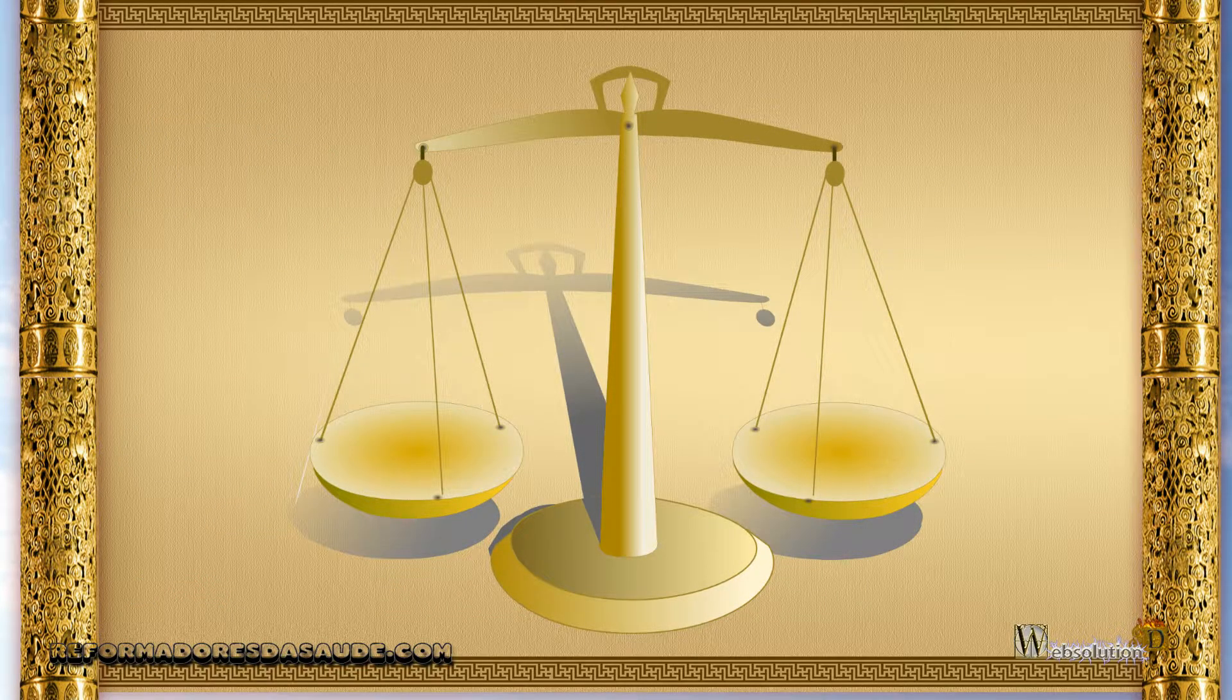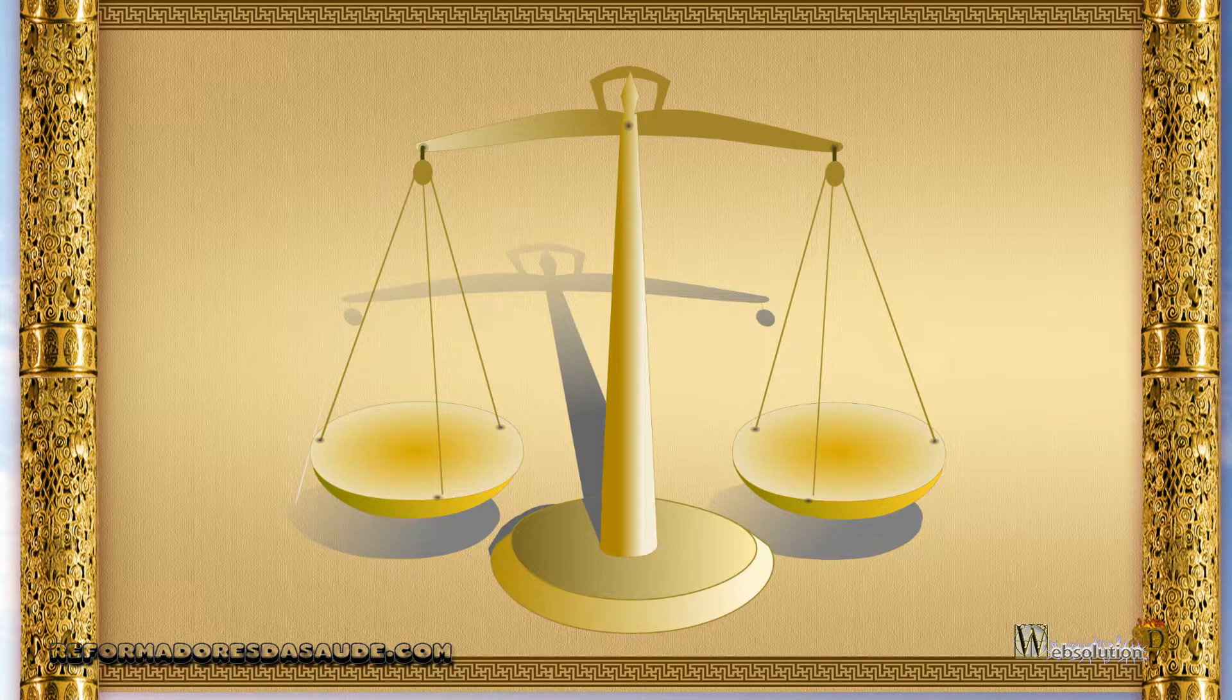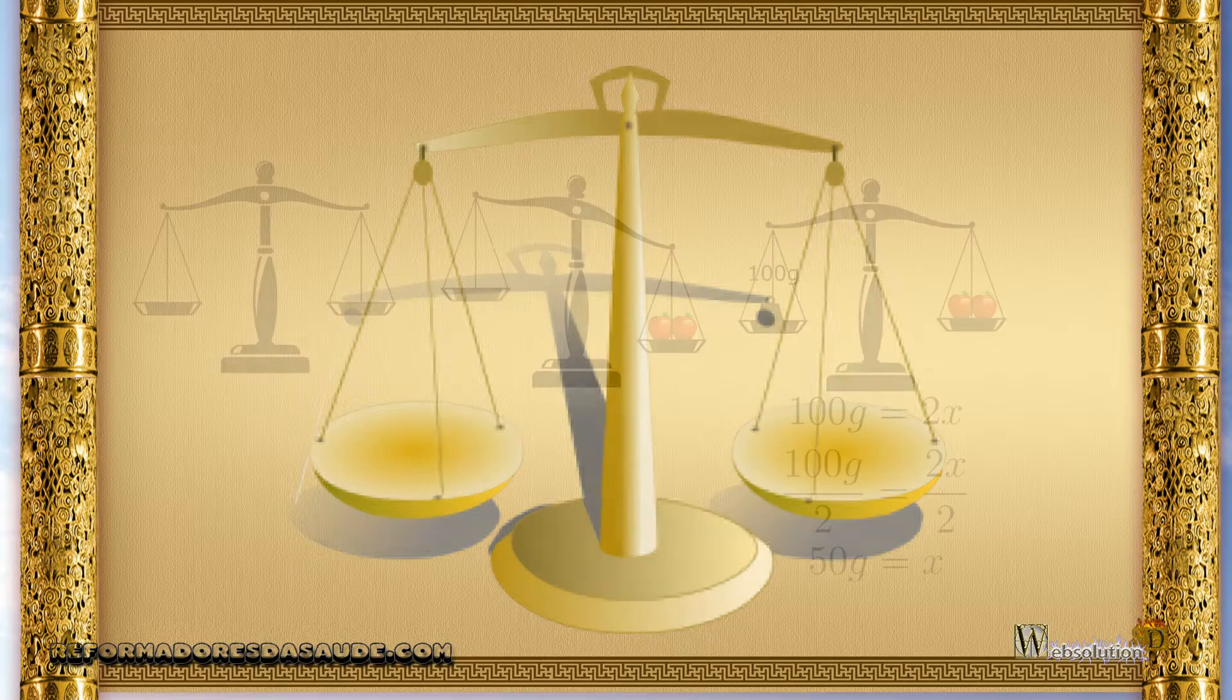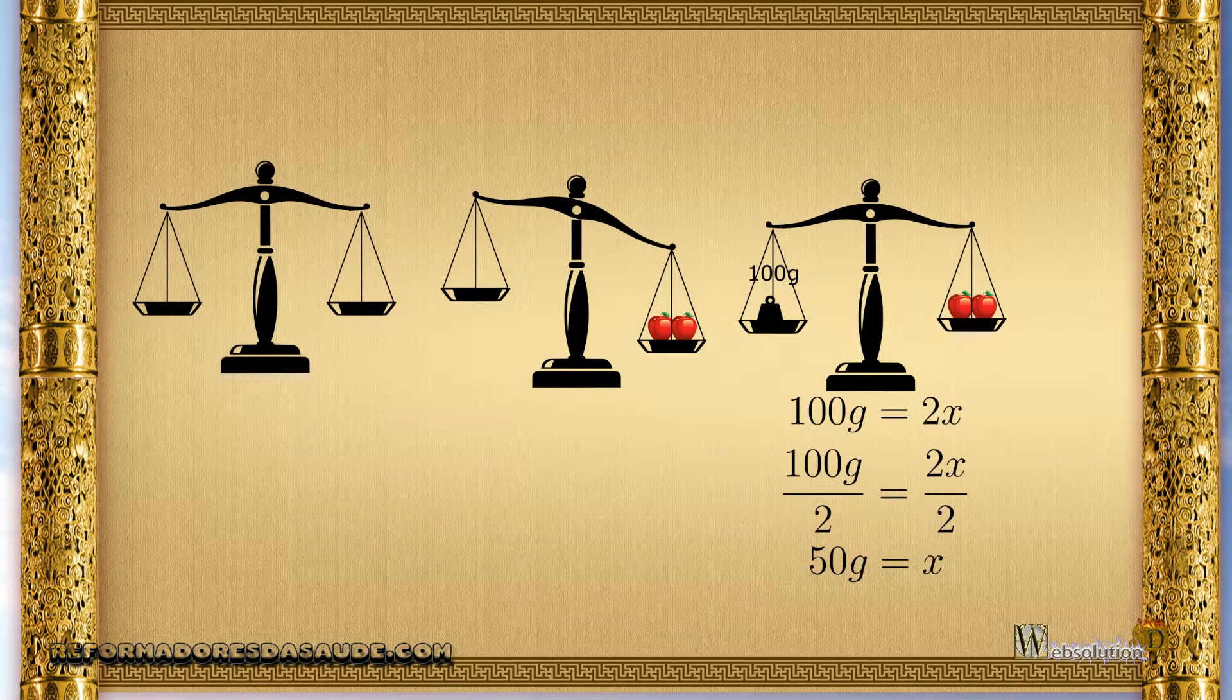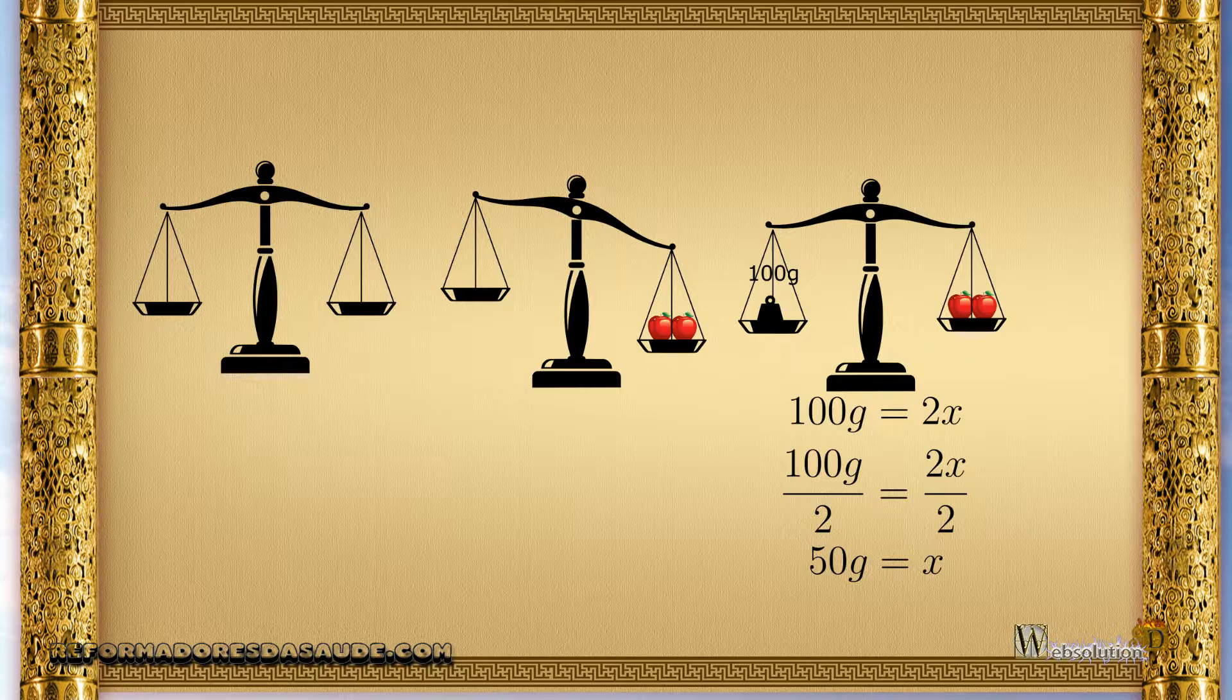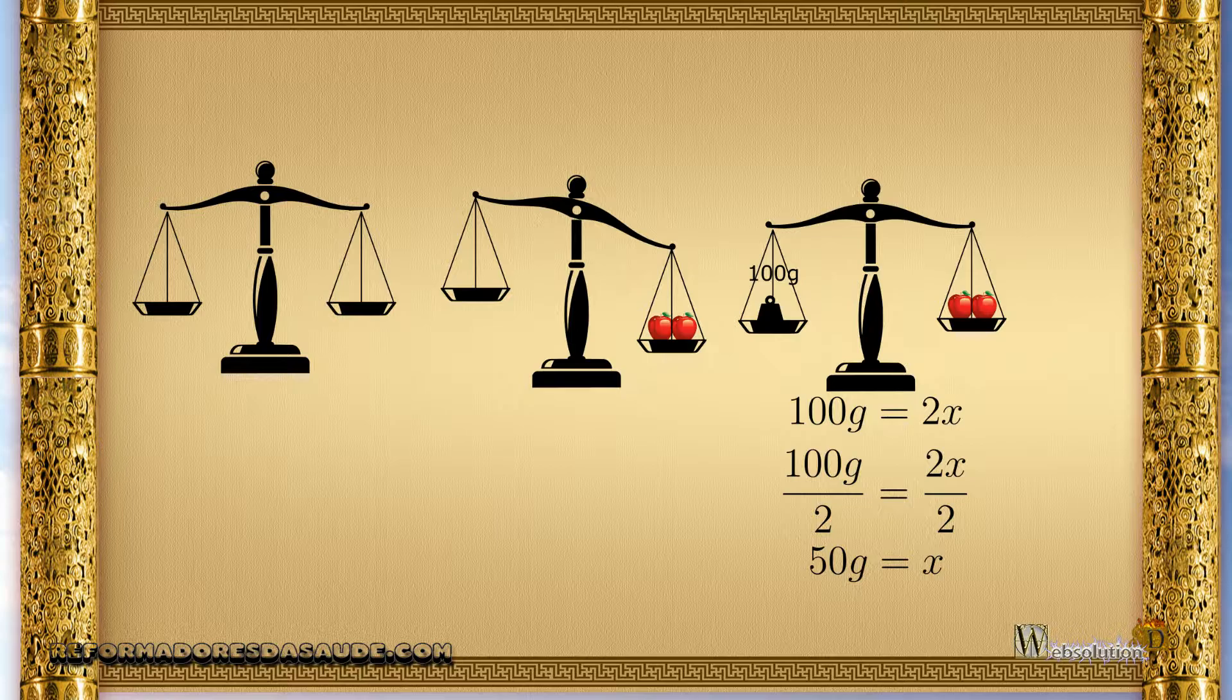An equation can be determined when the scales are at the same height. A seller puts two fruits on the scale - let's call the fruit x - and we want to know how much each fruit weighs. First, the scale hangs on the side with the fruit. The unbalanced scale is not the same, that is, it is not an equation.